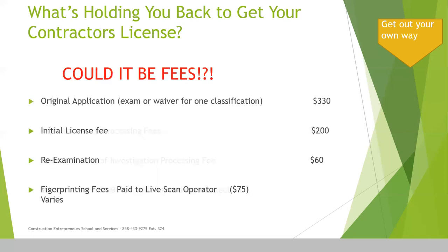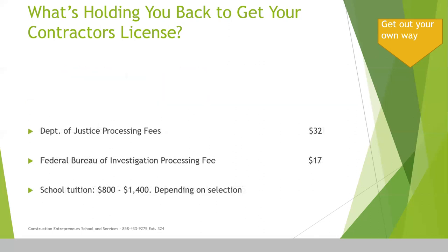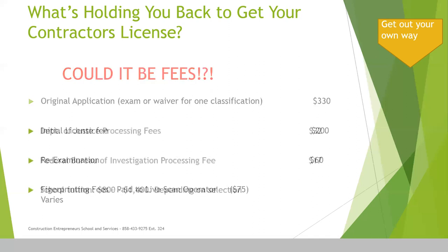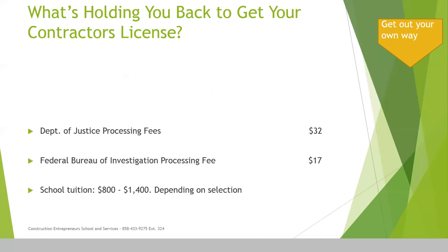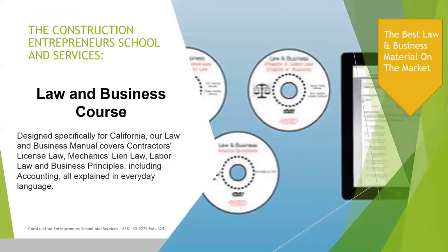So let's go over this again. You've got the application fee, which is $330. You've got the live scan fingerprinting — the last person who got it done in LA, as of September 14th, 2020, paid $77. Then you've got the processing fees of $32 and $17. After you pass the exam, there's another $200 you need to pay to make your license active, and then you've got the fee for your bond, which depends on your credit.